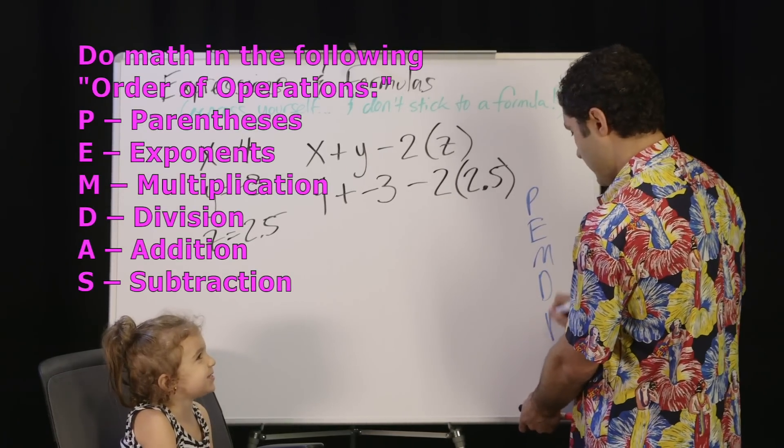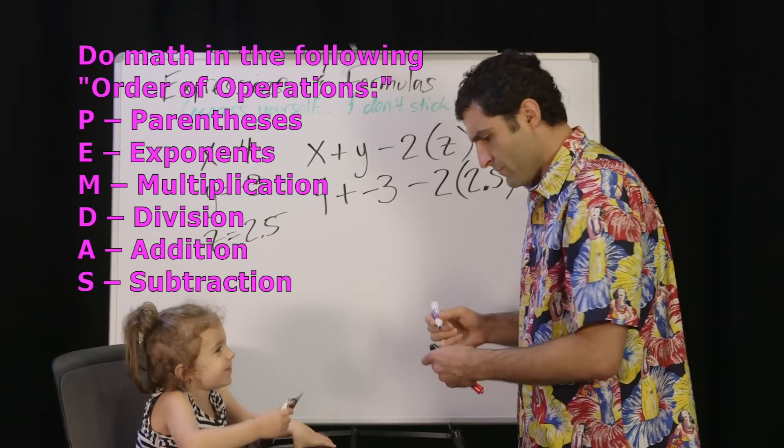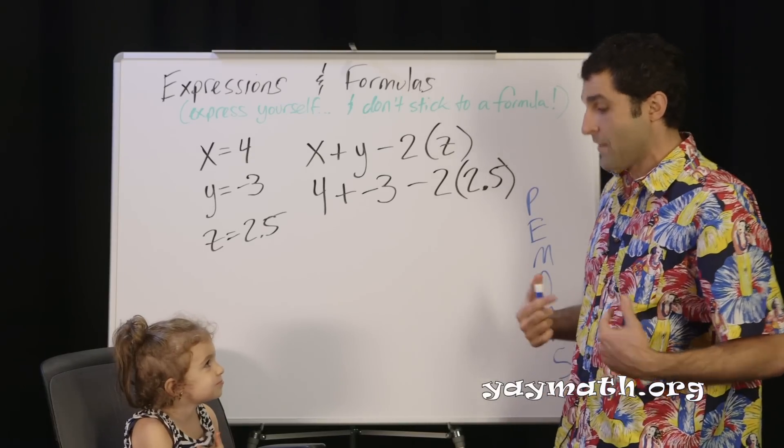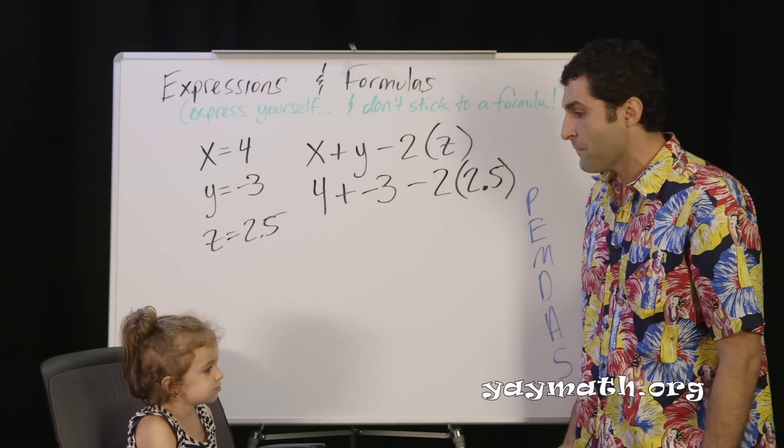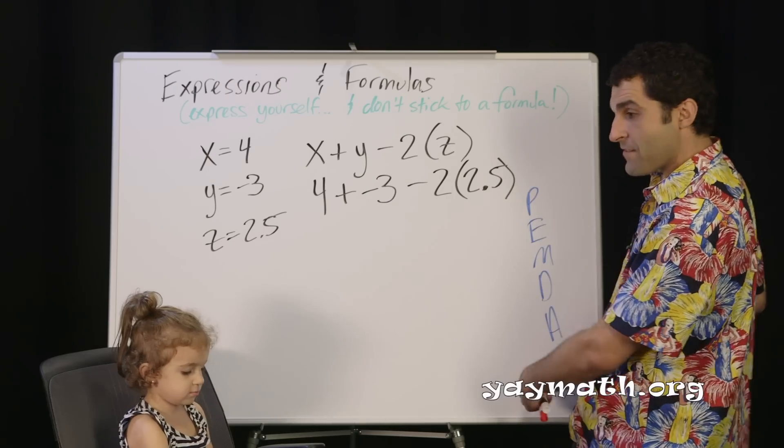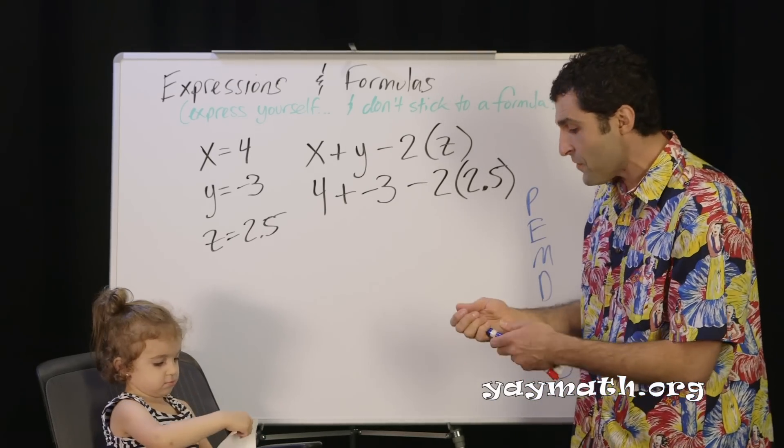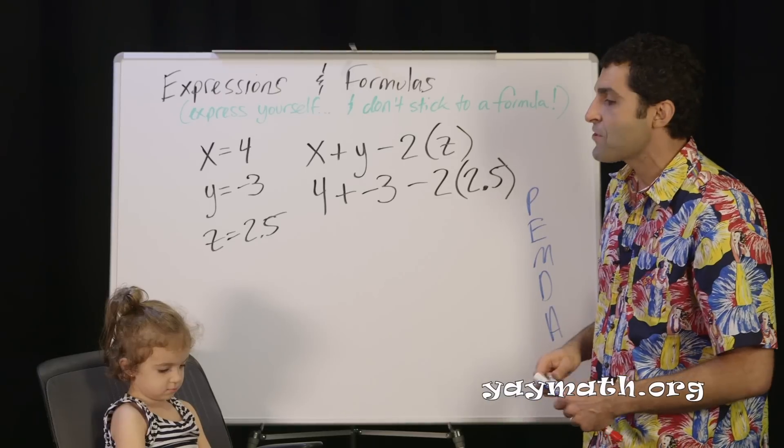What is order of operations? PEMDAS, right? PEMDAS is the order of operations, and here you see multiplication comes first. That's all we have to do, so we're going to do 2 times 2 and a half. That's like double your age. How old will you be at double your age? I was going to say 5.